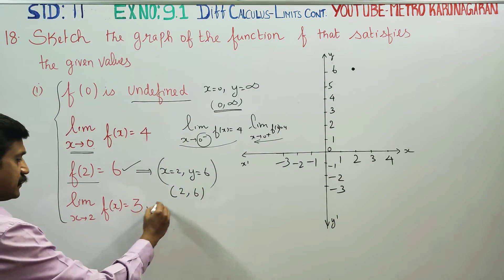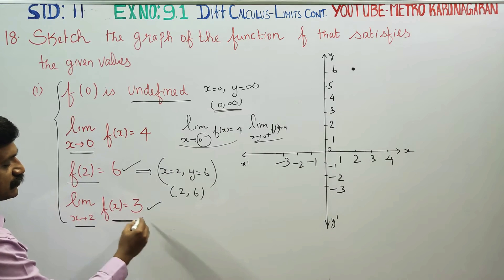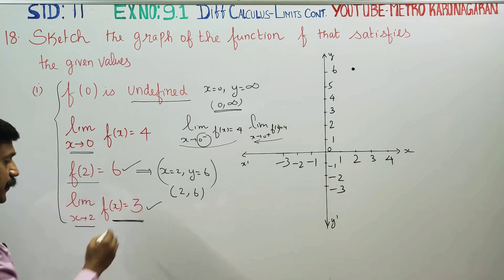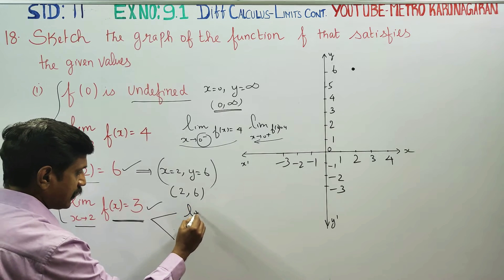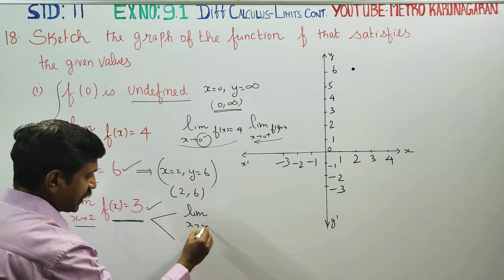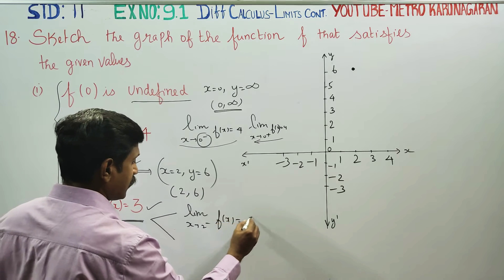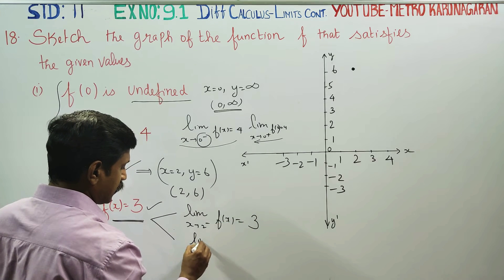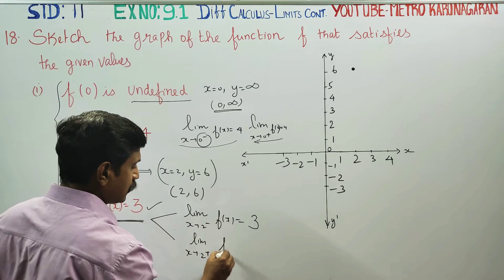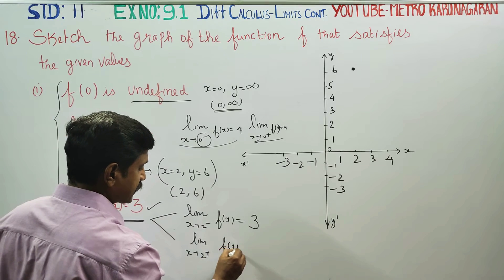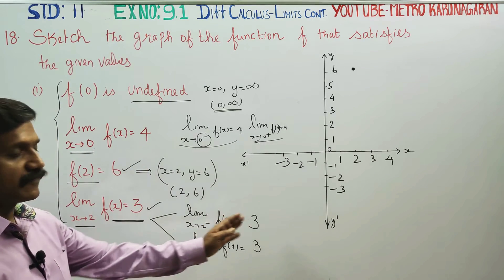Here is the next condition: when x approaches 2, f(x) approaches 3. The left-hand limit as x approaches 2 minus gives f(x) approaching 3. That means the right-hand limit as x approaches 2 plus also gives f(x) approaching 3. So the value 3 is reached from both sides.